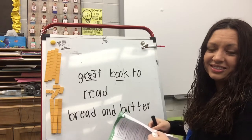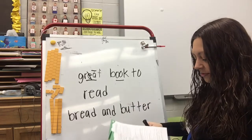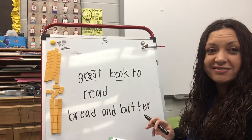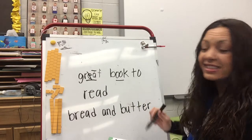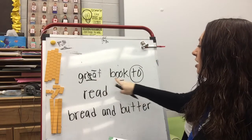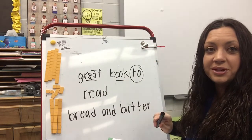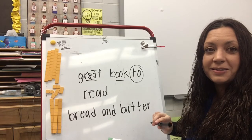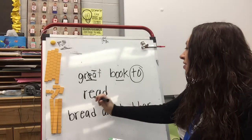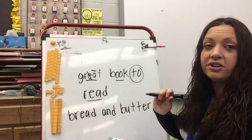You guys just know that one, don't you? But how would we code it? Is there a way to code it? No, it's one of those sight words, so we're just going to circle it. 'Great book to,' and then this last word — what are we going to do to it? What do you see? I've got that E-A, so I need to underline it.